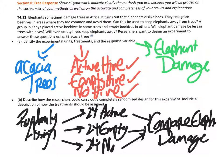Another method: randomly assign the numbers 01 to 72 to the 72 trees, then write each number on separate equally sized slips of paper and put them in a hat. Randomly pick the first 24 slips and assign those trees to the active beehives. The next 24 slips will be the empty beehives, and the remaining trees will have no beehive. After the experiment is completed, compare the damage caused to the trees across the three methods.